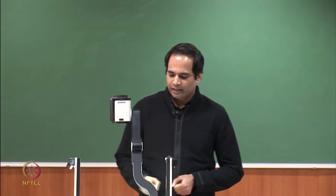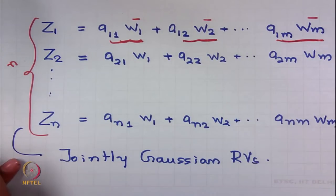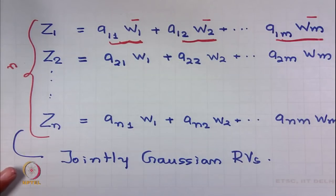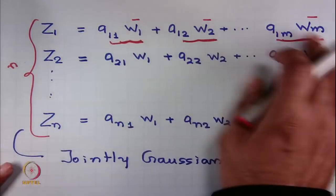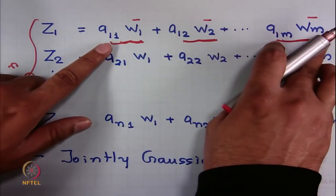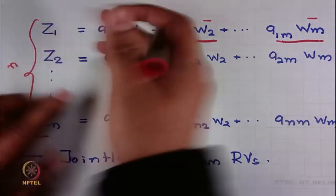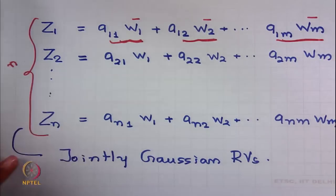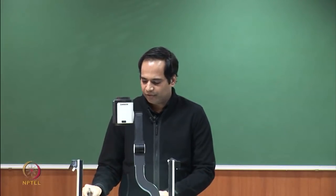Why are jointly Gaussian random variables so useful? Because they depict a physical noise process. Noise is a collection of many independent random disturbances, which is exactly what is happening here — the w components denote independent random disturbances. From the central limit theorem, adding many independent random disturbances gives a Gaussian random variable. So jointly Gaussian random variables model physical noise processes. W1, W2, ..., Wm are assumed normal IID to keep the model simple and tractable.